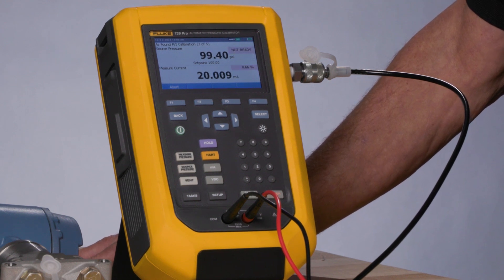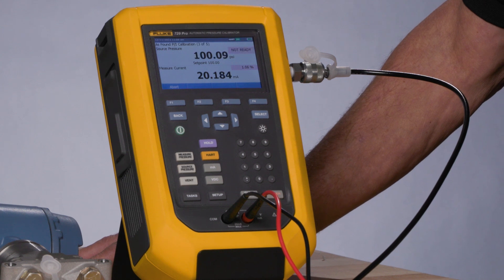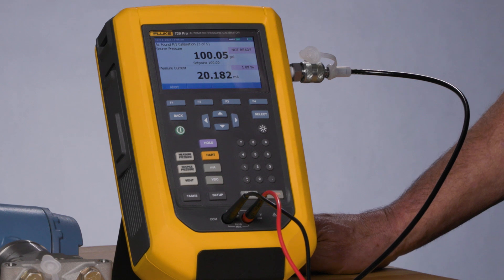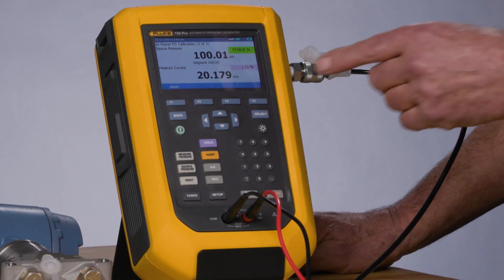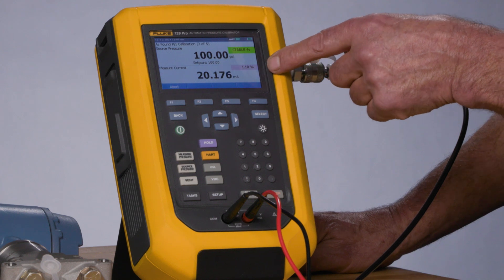Now it's going to 100 psi. And you see the milliamp value being recorded, and its error percent.